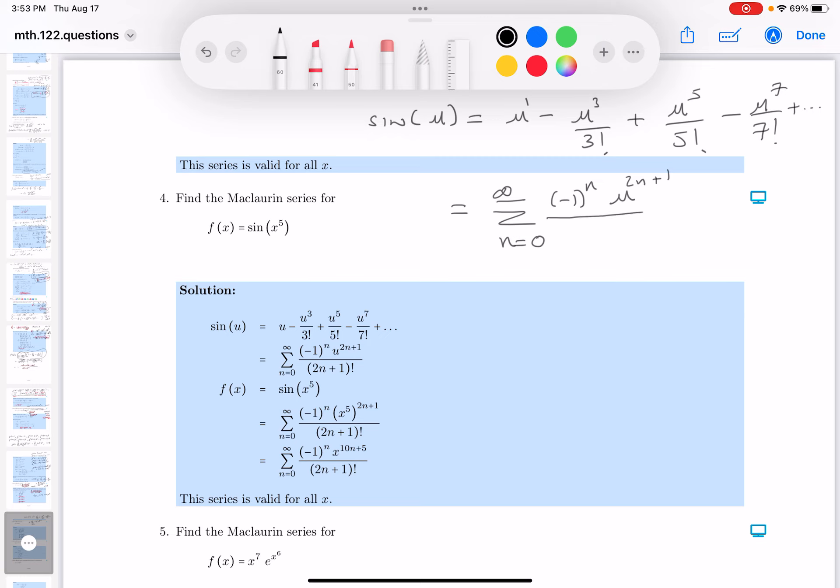What goes on bottom? Well, I'm going to say this is going to be, let's see, it goes down by 2, so this would be 1 factorial. So, what goes over here, 2n plus 1 factorial, and we're done. What's the interval of convergence? u can be any real number, by the way.